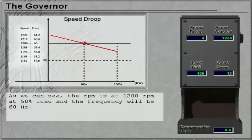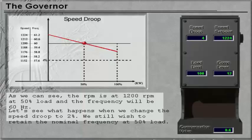As we can see, the RPM is at 1200 RPMs at 50% load and the frequency will be 60 Hz. Let's see what happens when we change the speed droop to 2%.